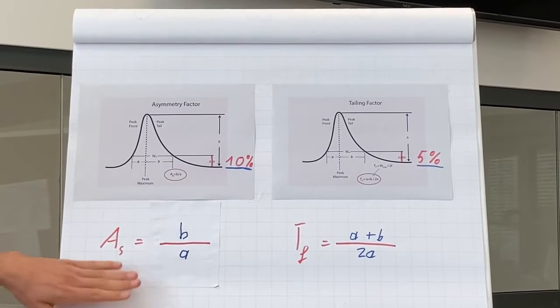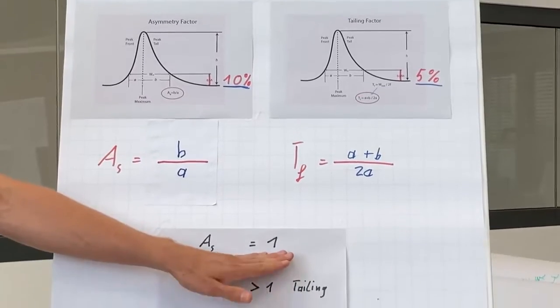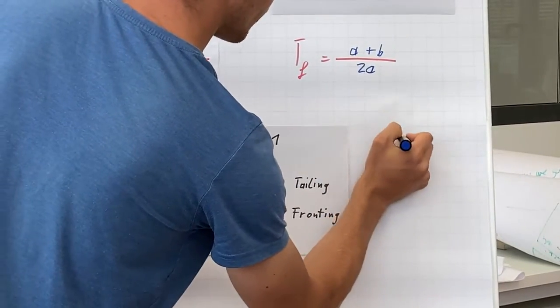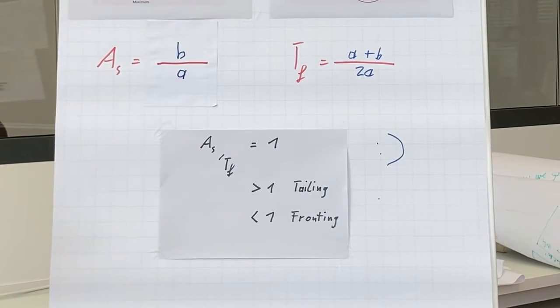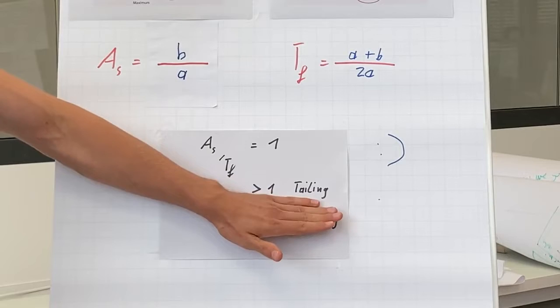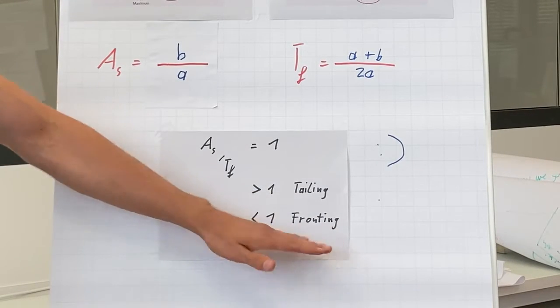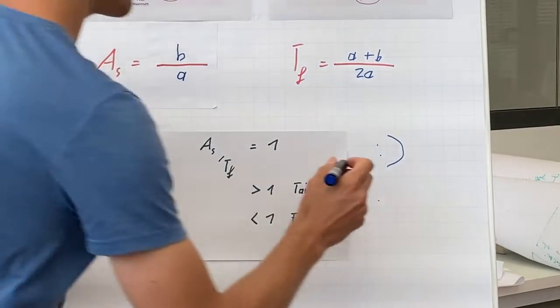If the asymmetry factor or tailing factor takes the value 1, we are happy because we have symmetrical peaks. A value higher than 1 defines peak tailing, whereas a value less than 1 defines peak fronting. In this case, we are not happy because we have non-symmetrical peaks.